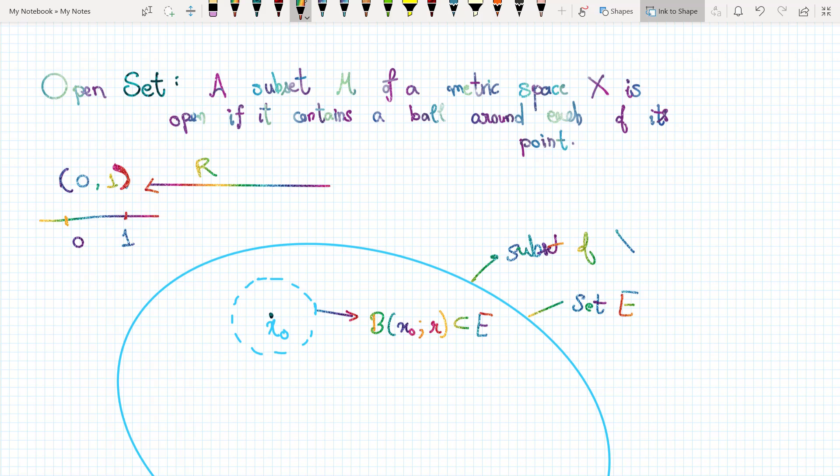If I want to extend this idea to a more general setting, I would define it this way. Intuitively, the idea is: the set of all points between 0 and 1, with 0 and 1 not included. In higher dimensions, consider a point x0 and draw an open ball around it.